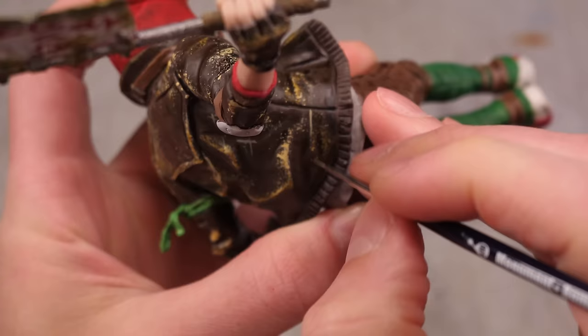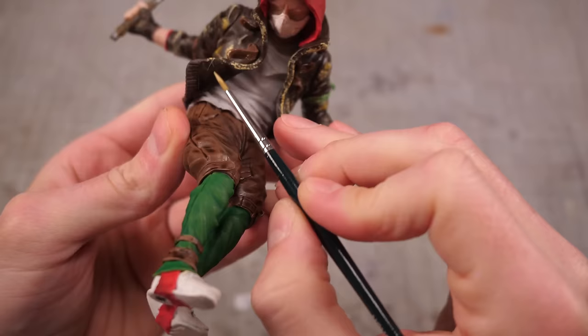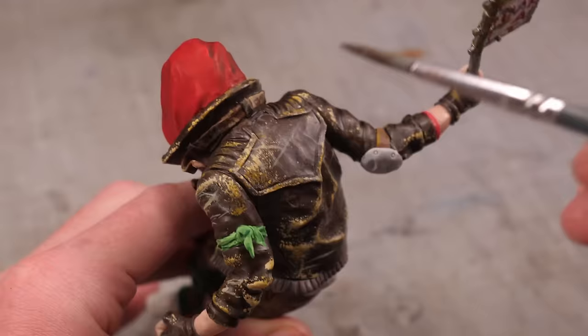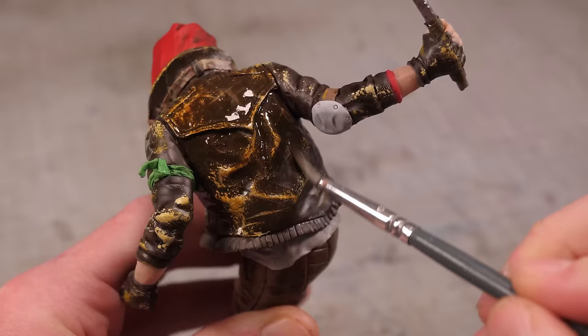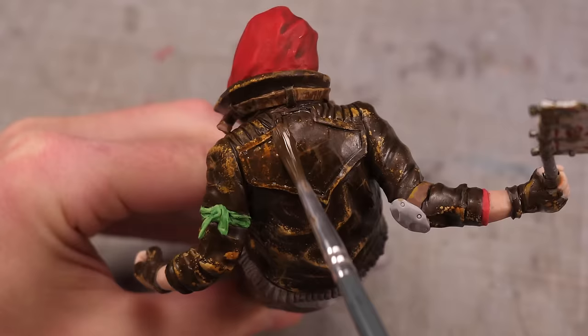I know it looks a little vibrant right now but wait till you see the magic of glazing. Glazes are basically extremely thinned out paints that you can apply over a surface to gradually build up a color which in this case will be the final dark leathery brown.